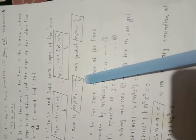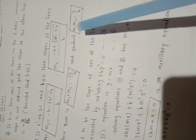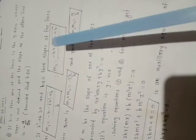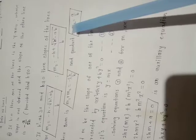From those two slopes, the sum m1 + m2 = -2h/b, and the product m1 × m2 = a/b. These formulae from the theorem should be remembered.